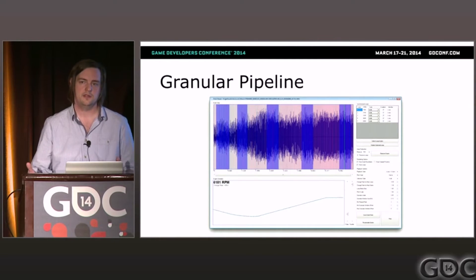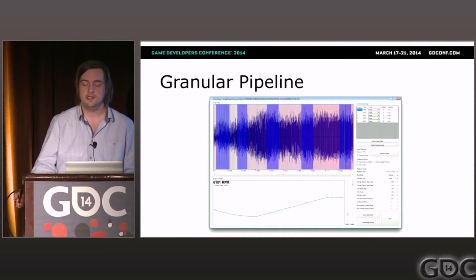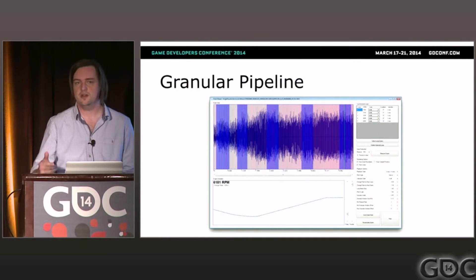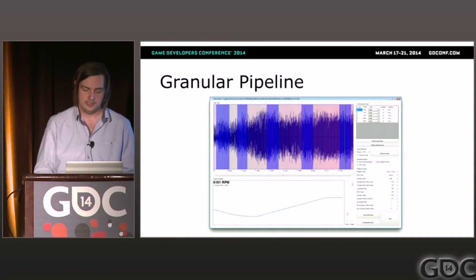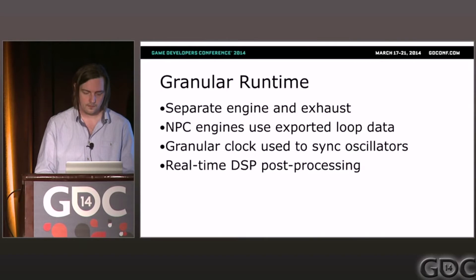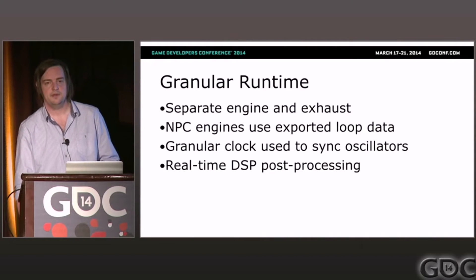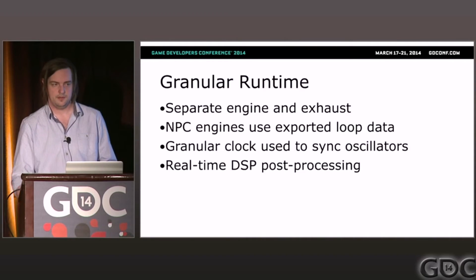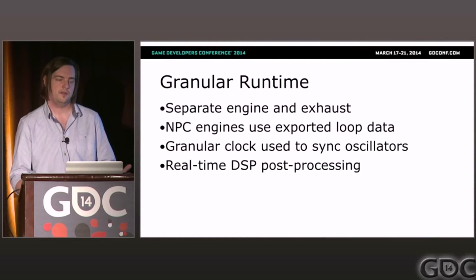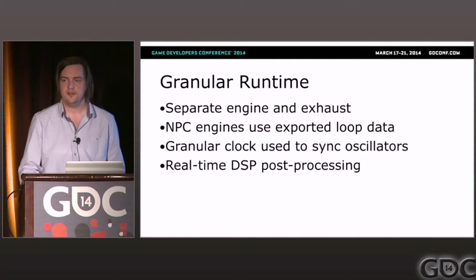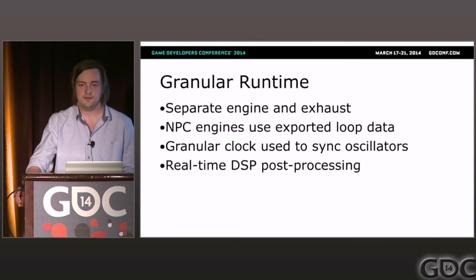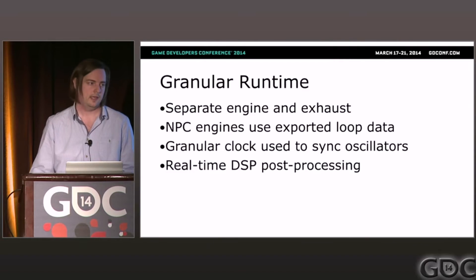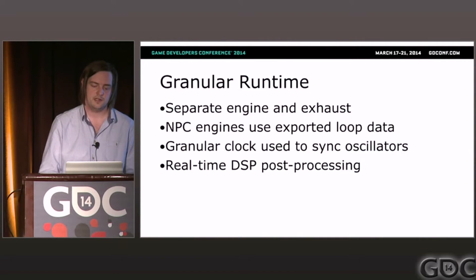We also added the ability to optionally optimize the asset — once we've sliced into grains, you can pick a region and discard a percentage of the grains, which is a fast way of cutting things down to size. We retain separate engine and exhaust data, running two granular synths in game — one for engine, one for exhaust. This is purely for mix reasons: it allows the exhaust to be audible over a greater distance, and for a front-engine car we can cone the engine out the front and the exhaust at the back, giving a pleasing transition as a car drives past.